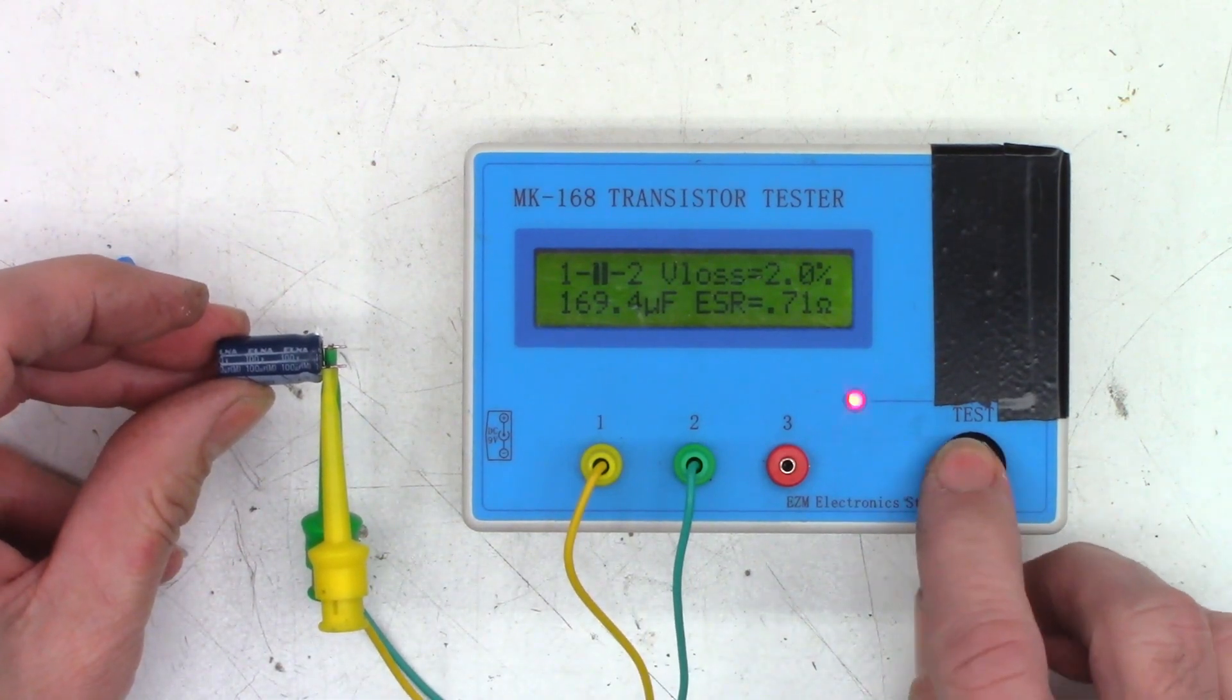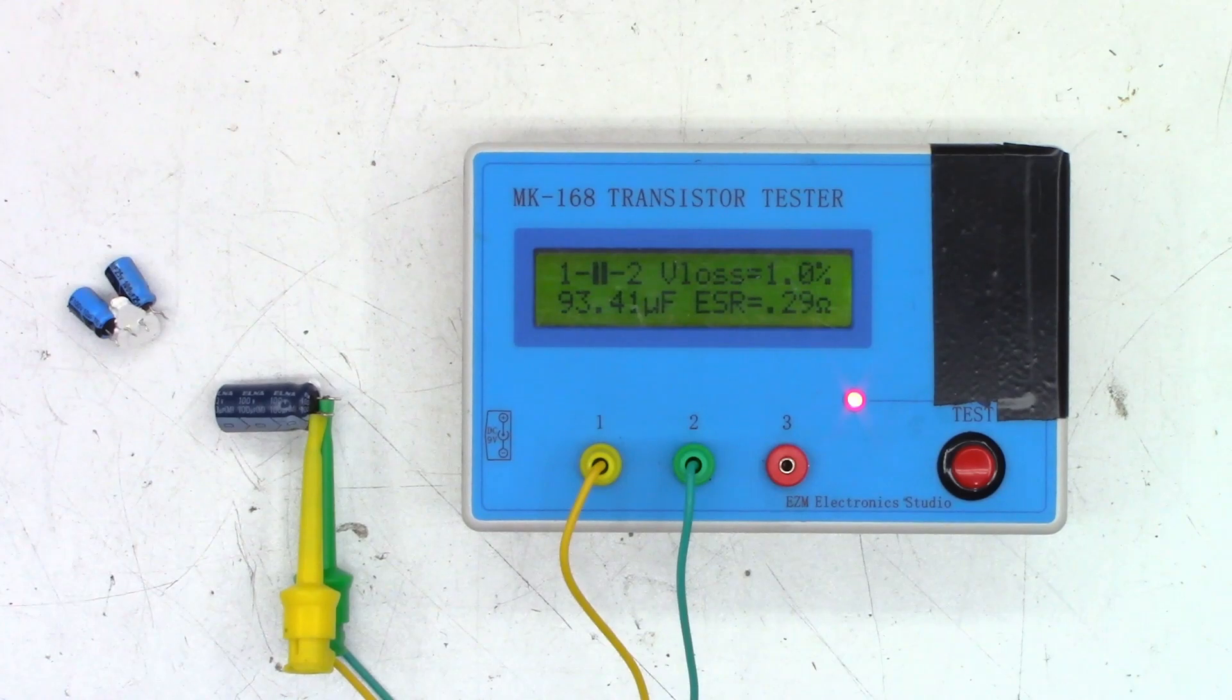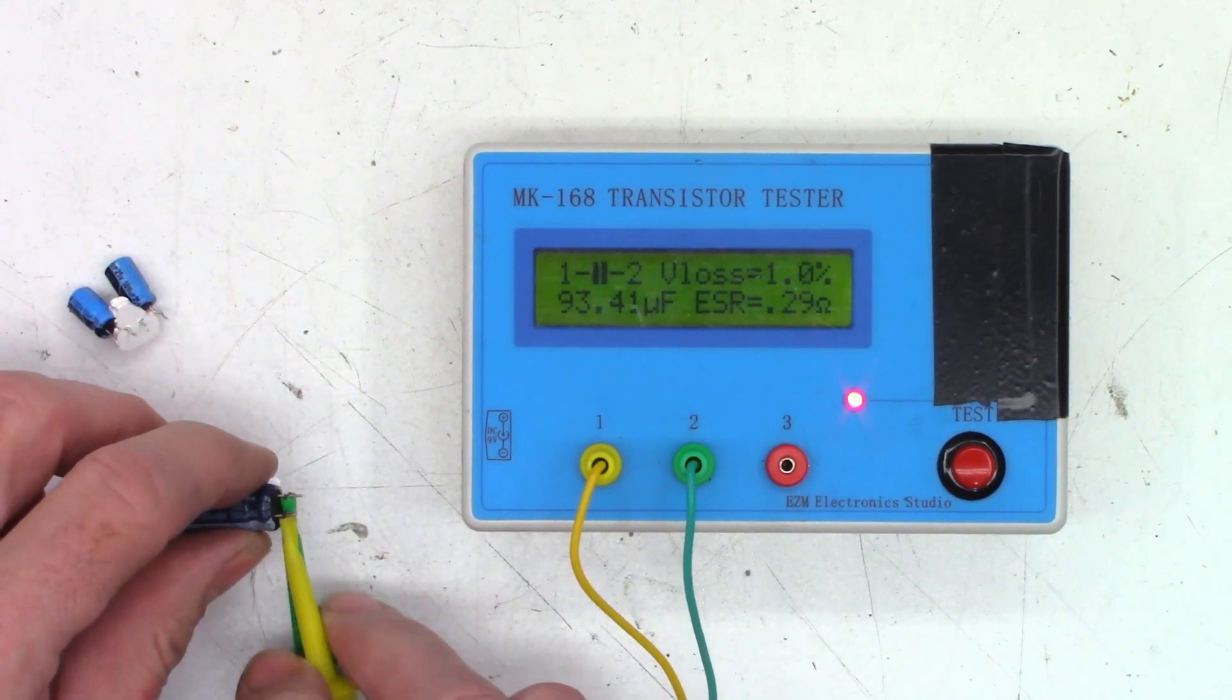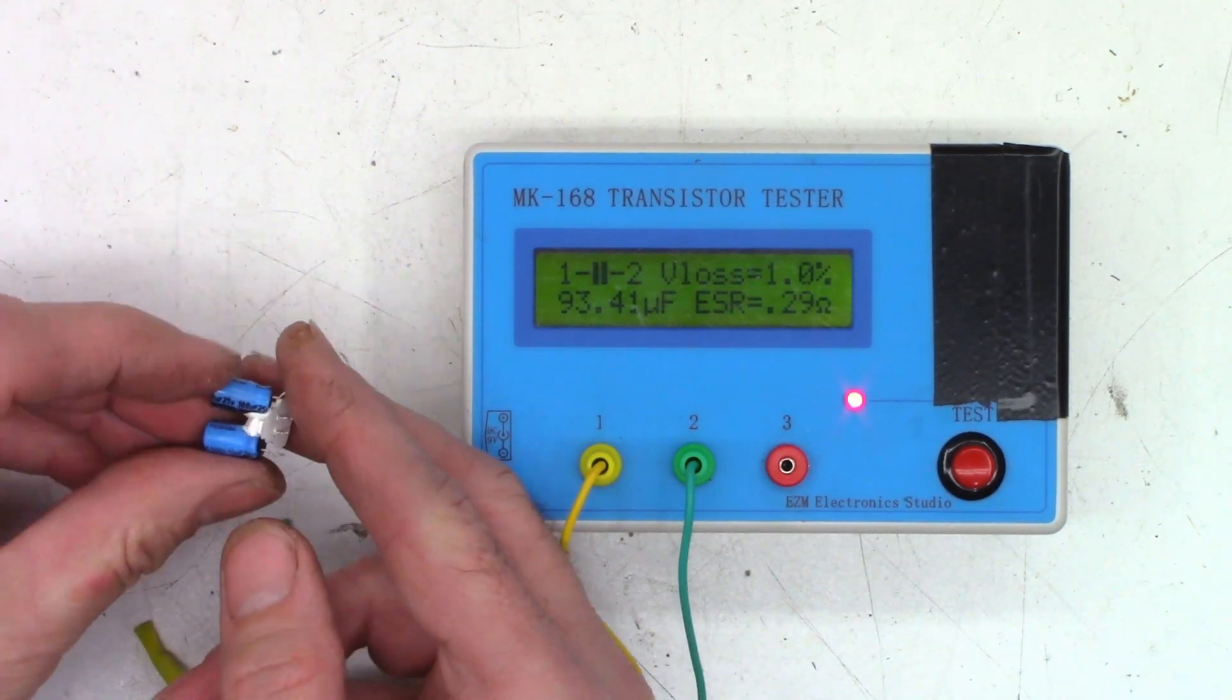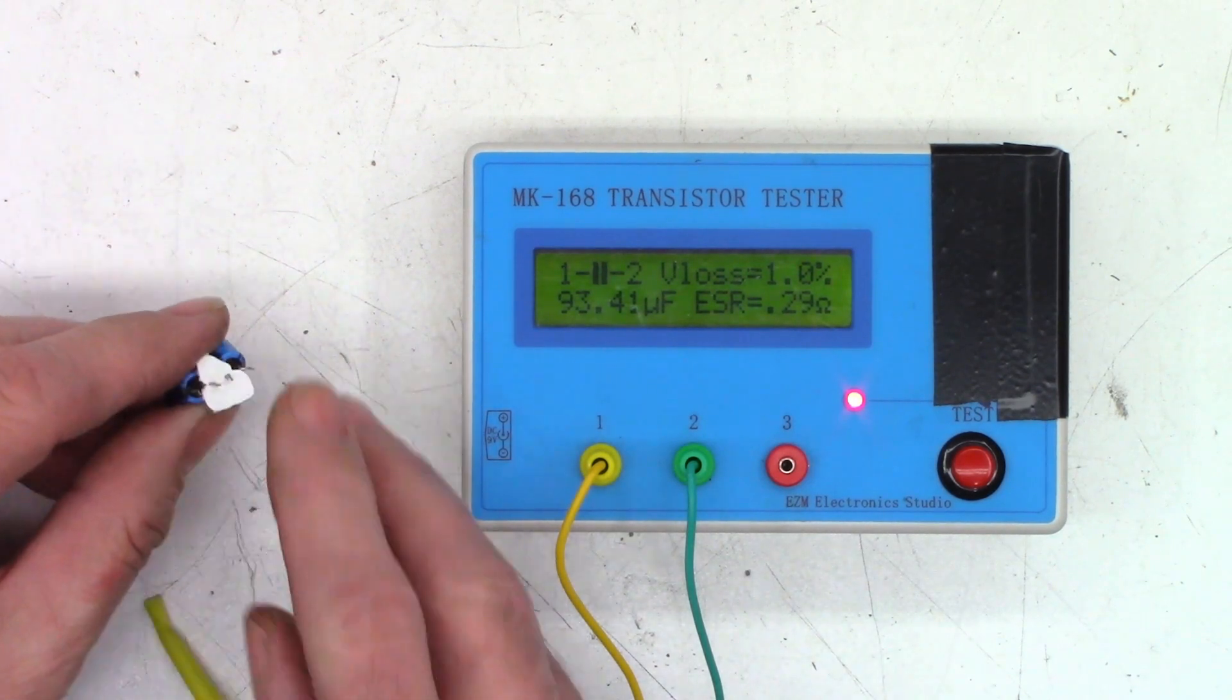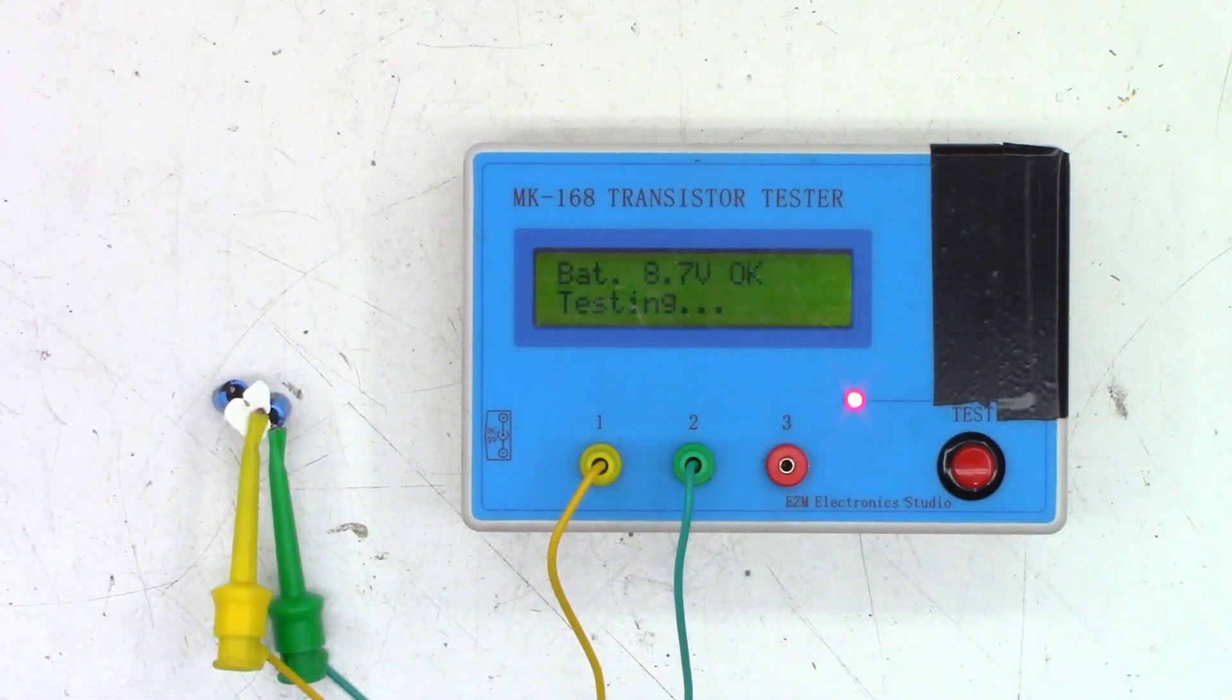Now this one is a 100 at 100: 93.41 microfarads with an ESR of 0.29, perfectly happy with that, and a V loss of 1 percent, absolutely perfect. These next two are stuck together. The first one is a 100 at 25 volts, and it measures 92.24 microfarads with an ESR of 1.1 ohms, perfectly happy. V loss is just a hair on the high side at 2.1 percent, but I've seen way worse.